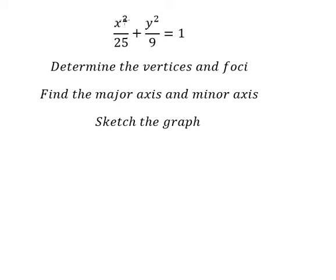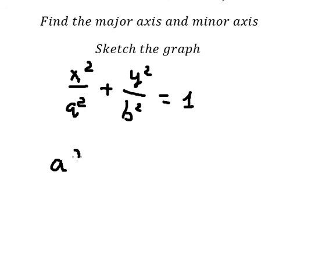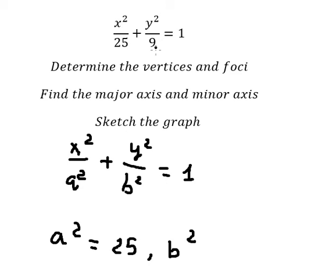The first thing, if we look carefully at this one, we have the formula here. So, this is 25, so a squared equals 25, and b squared equals 9.